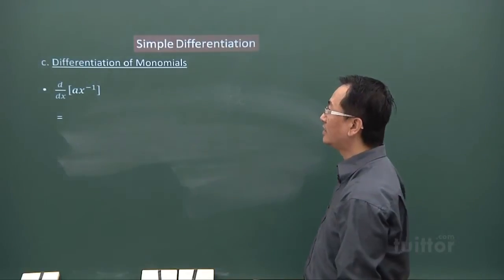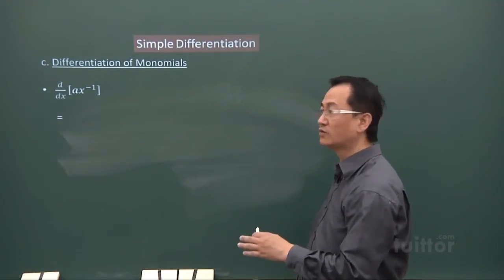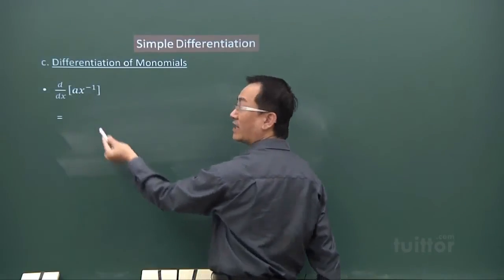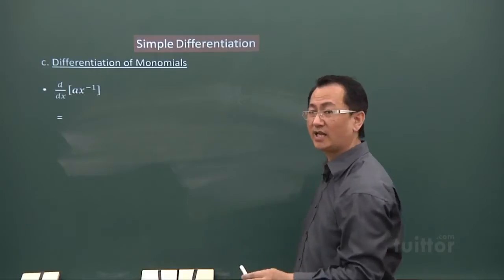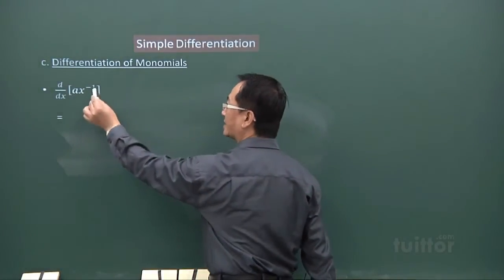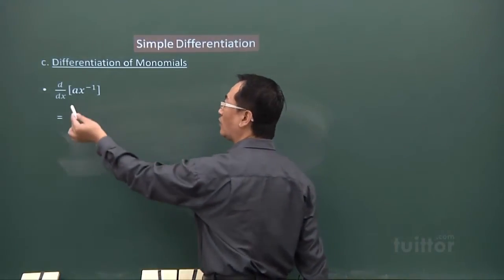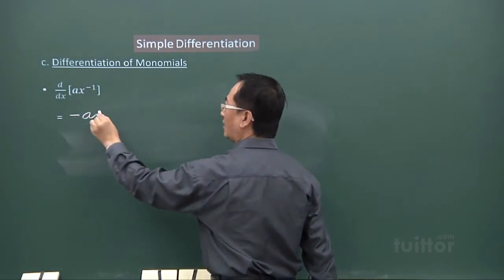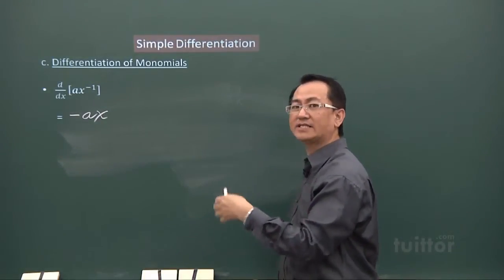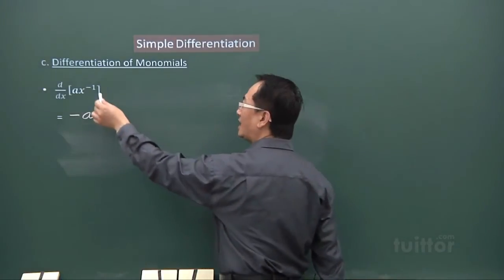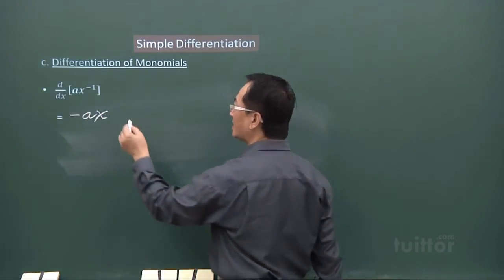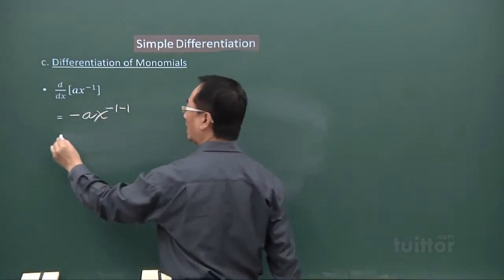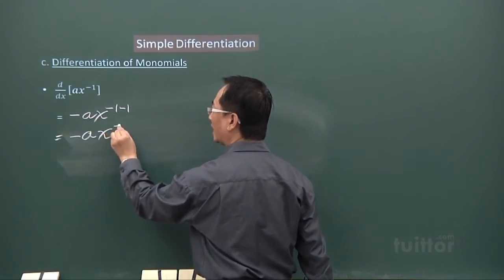Now we look at differentiation of monomials. In this arrangement you have a times X to the power of negative 1. The index is negative 1 and the coefficient is a. When you differentiate, take the index negative 1 and multiply it to the coefficient a — you get negative a. Then write the base X, but the index reduces by 1: negative 1 minus 1 gives negative 2, so the result is negative a times X to the power of negative 2.